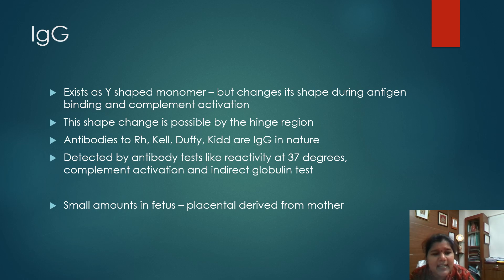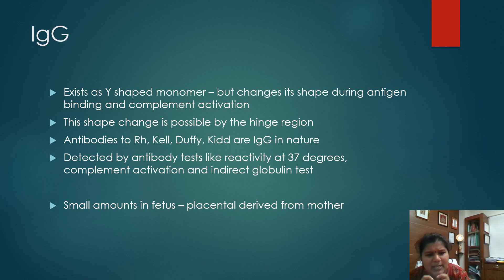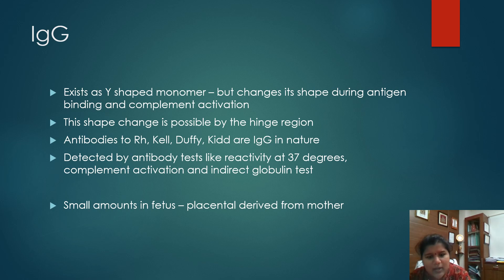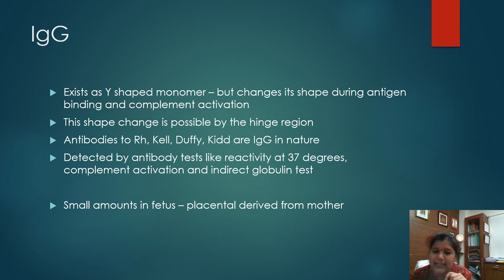Coming to IgG — it exists as a Y-shaped monomer but changes its shape during antigen binding, with the help of the hinge region. Antibodies to the Rh group, Kell, Duffy, and Kidd are all IgG in nature. IgG can be detected using antibody tests such as reactivity at 37 degrees centigrade, complement activation, and indirect globulin tests.